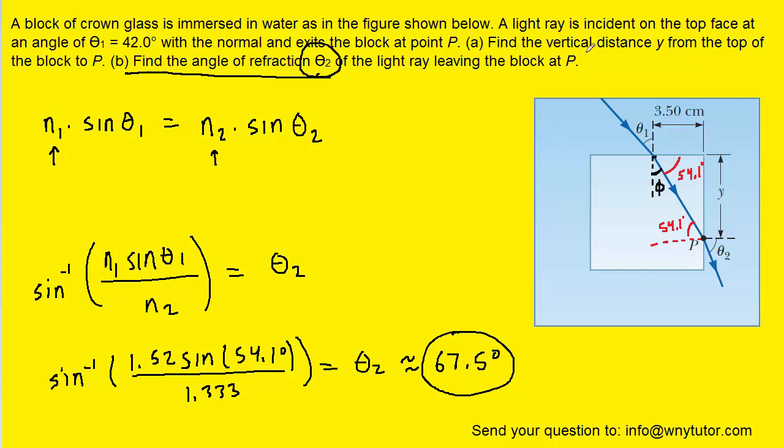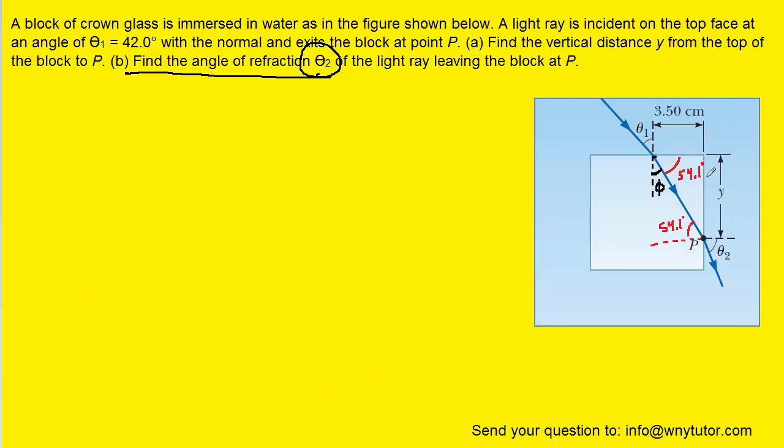We can go back to part A and look for the vertical distance from the top of the block to point P. And that's marked in the figure as being Y. If we look carefully, we can simply use a little bit of trigonometry now. We have this angle marked as 54.1 degrees. The side that's marked Y is opposite that angle. And then this side right here is adjacent to that angle.